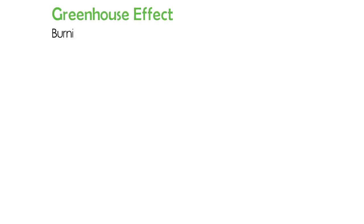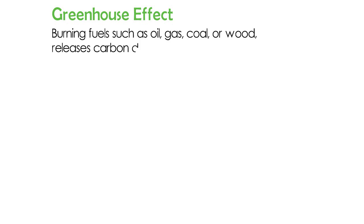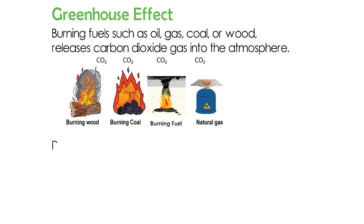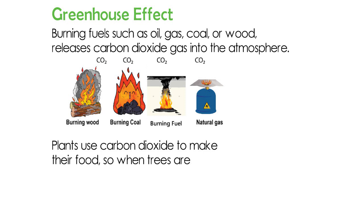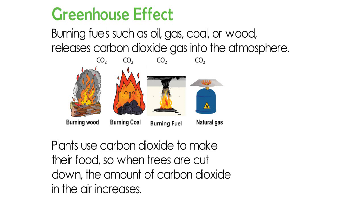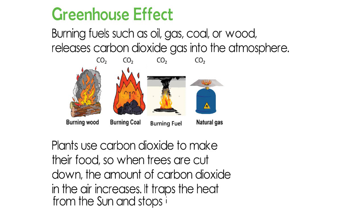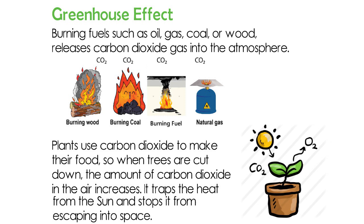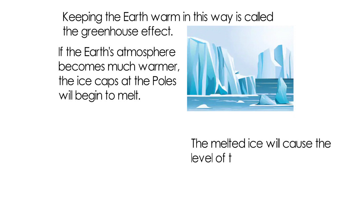Greenhouse effect: burning fuels such as oil, gas, coal, or wood releases carbon dioxide gas into the atmosphere. Plants use carbon dioxide to make their food, so when trees are cut down, the amount of carbon dioxide in the air increases. It traps the heat from the sun and stops it from escaping into space. Keeping the earth warm in this way is called the greenhouse effect. If the earth's atmosphere becomes much warmer, the ice caps at the poles will begin to melt. The melted ice will cause the level of the seas to rise, which could cause serious floods in low-lying towns, cities, and fields.